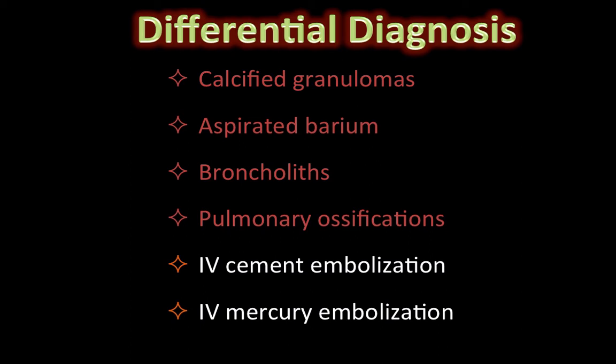Pulmonary ossifications are usually so tiny that they are difficult to see on chest radiographs, and if seen they may appear as reticulonodular opacities. They are usually easier to see on CT than on radiographs.